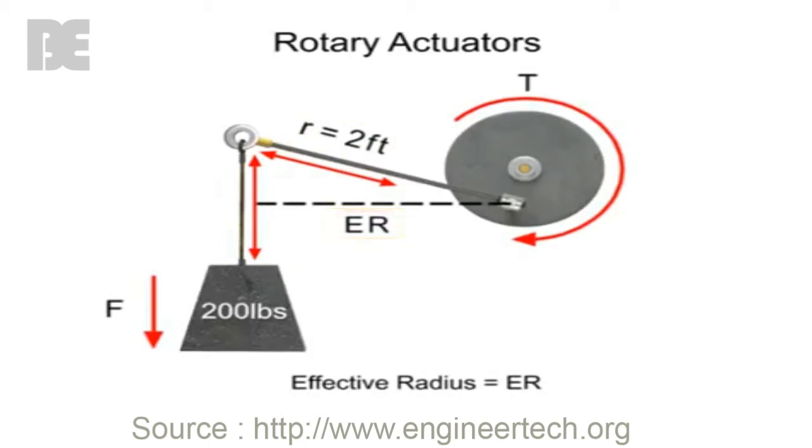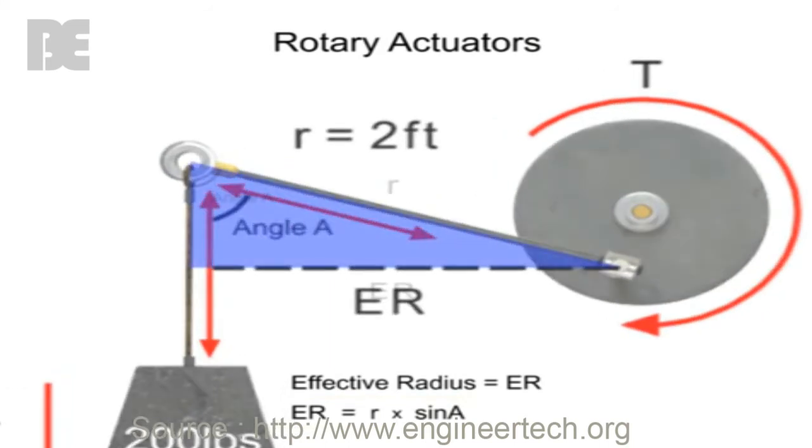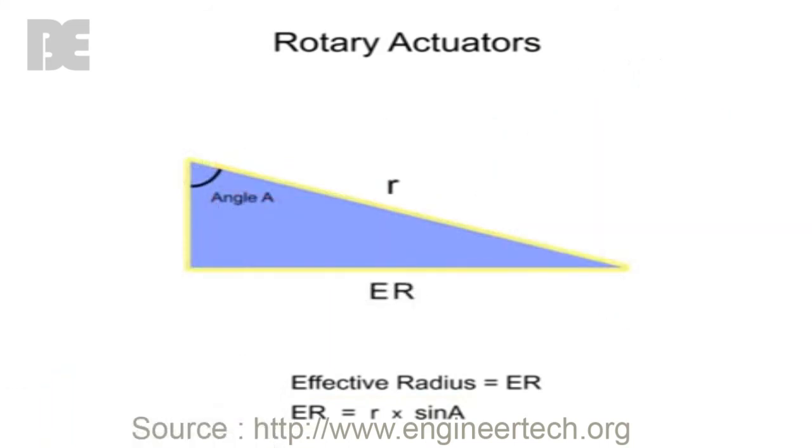To calculate the effective radius, multiply the length of the lever arm times the sine of angle A. Sine is a trigonometric function for a right triangle that relates the ratio of the side opposite of a given angle to its hypotenuse.